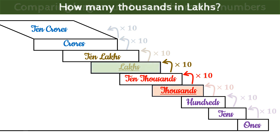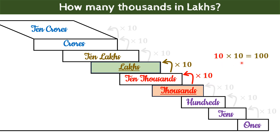Now let us compare 1 Lakh and 1 Thousand. If you wanted to give someone 1 lakh rupees, then how many notes of 1 thousand must you give? Here on this staircase, after 1 thousand, we have to climb two more steps to reach 1 lakh. Hence, these two 10s will be multiplied together — 10 × 10 = 100. So, 1 Lakh is 100 times of 1 Thousand.